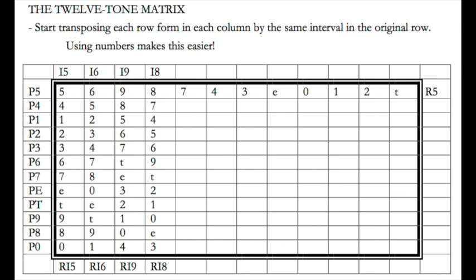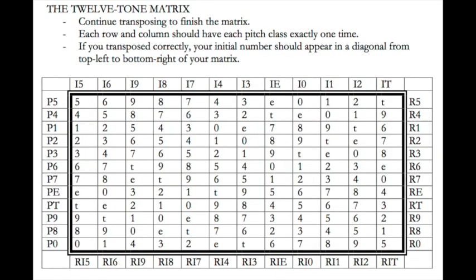From my third column, I9, to my fourth column, I8, I went down by one semitone — minus 1 — so I subtract 1 from every number in the third column: 9-1=8, 8-1=7, 5-1=4, 6-1=5, 7-1=6, and so on. This is the real reason I love using pitch classes — it makes this a lot faster when you can think of it as a simple arithmetic problem. Once you complete all the transpositions, you will have a completed matrix. Each row and each column should have each pitch class exactly one time, and if you did it right, your initial number in the top left corner — 5 — should appear in a diagonal line from top left to bottom right. You can see that 5 threads its way diagonally through the entire matrix.